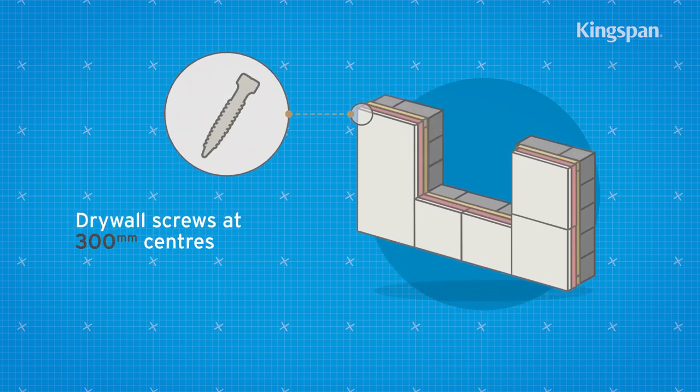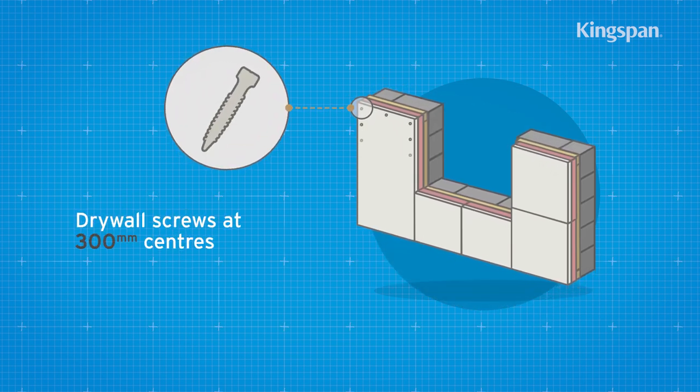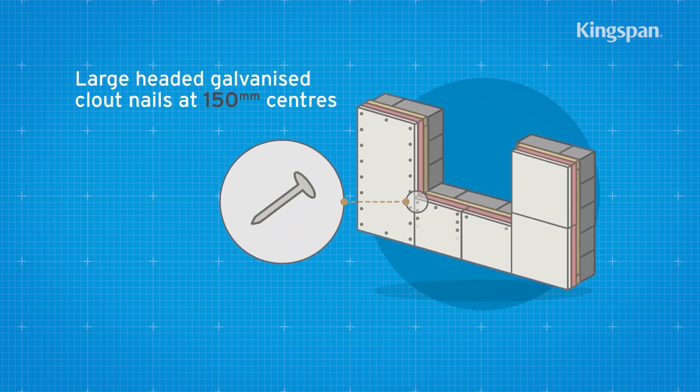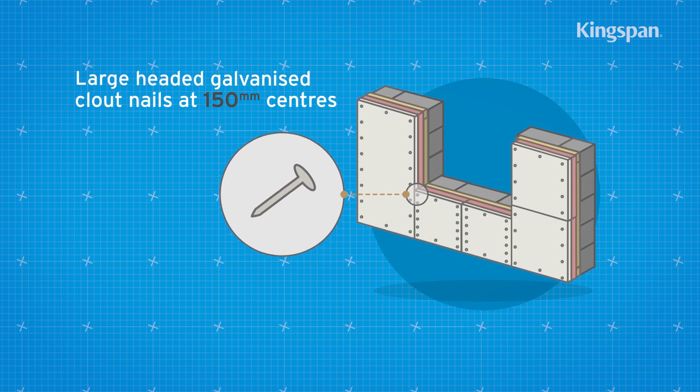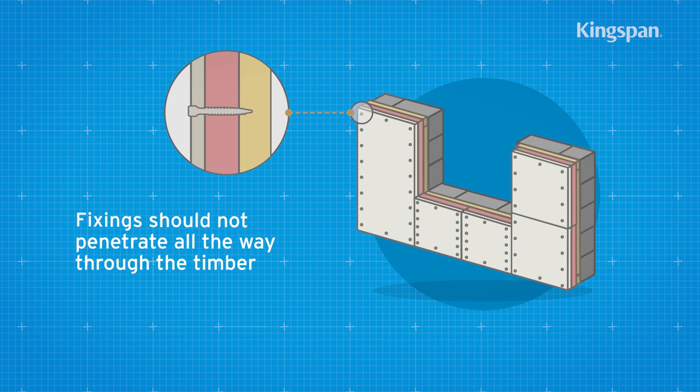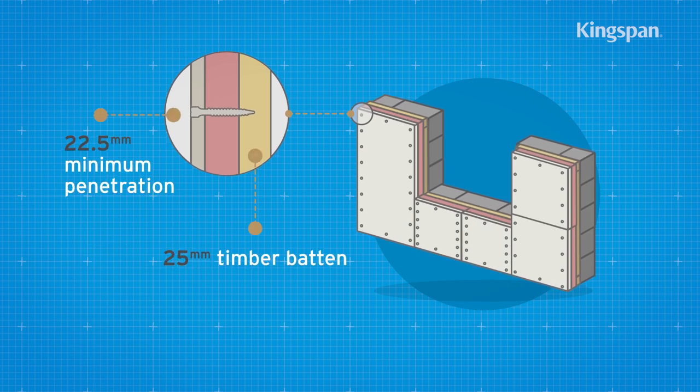Fix the sheets with either drywall screws at 300mm centres or large-headed galvanised clout nails at 150mm centres. Fixings should be long enough to allow a minimum penetration into the timber batten or frame.